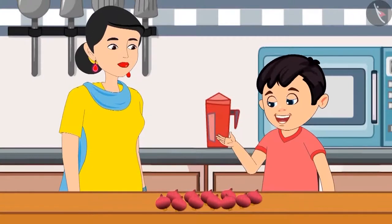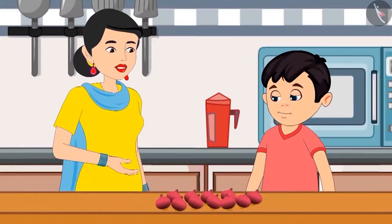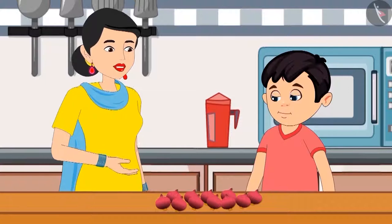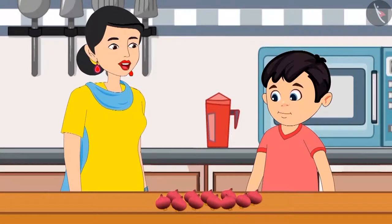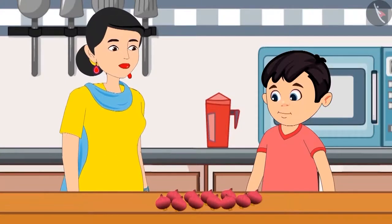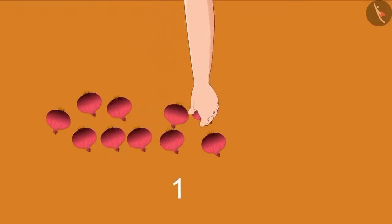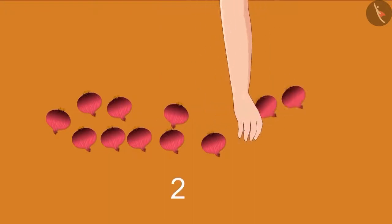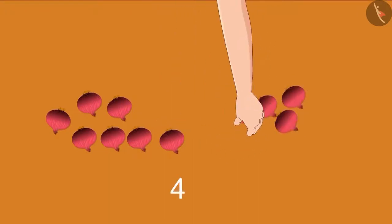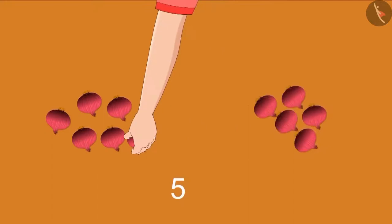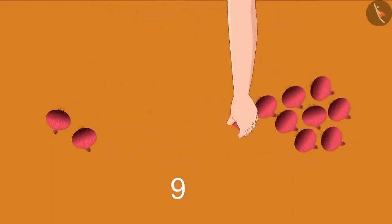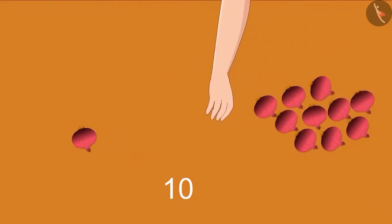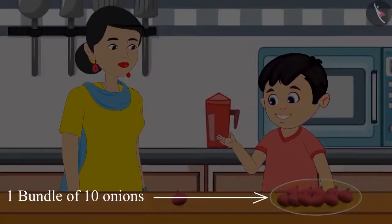Yes, Mommy. I will tell you now. Count the number of onions by making a bundle of 10 each. For this, first make 1 bundle of 10 onions. 1, 2, 3, 4, 5, 6, 7, 8, 9 and 10. Take this, Mother. This is a bundle of 10 onions.